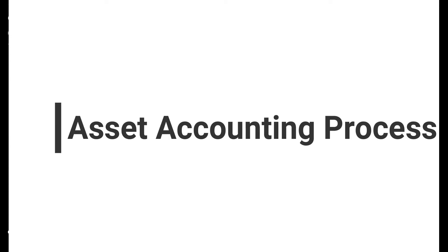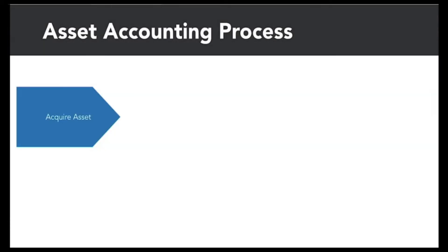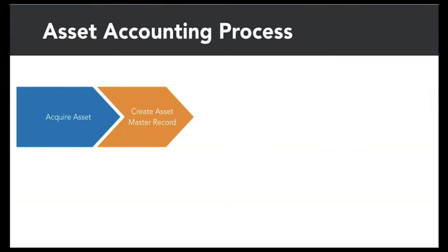The asset accounting process in SAP starts by acquiring an asset. Fixed assets are acquired externally as a purchase from a vendor, or internally by construction. Next, master data is important before we start any transaction in SAP. In this step, assets are classified according to their class. Examples of classes are buildings, computer software, and furniture. Asset classes are very important because the class determines the general ledger account where the transaction has to post.